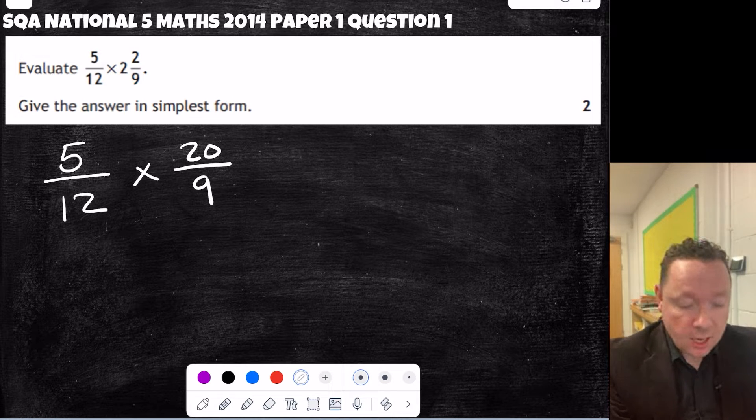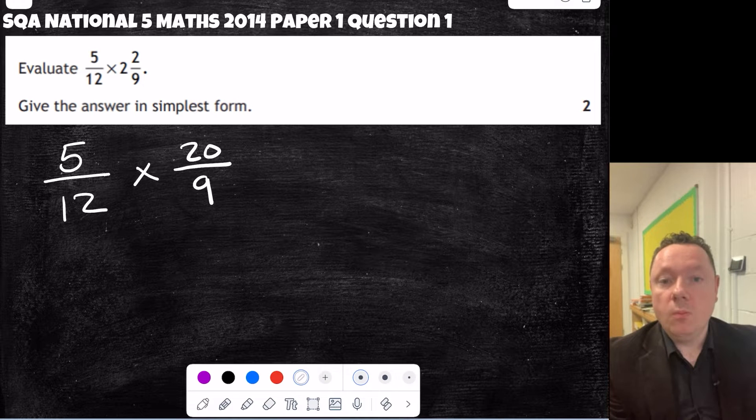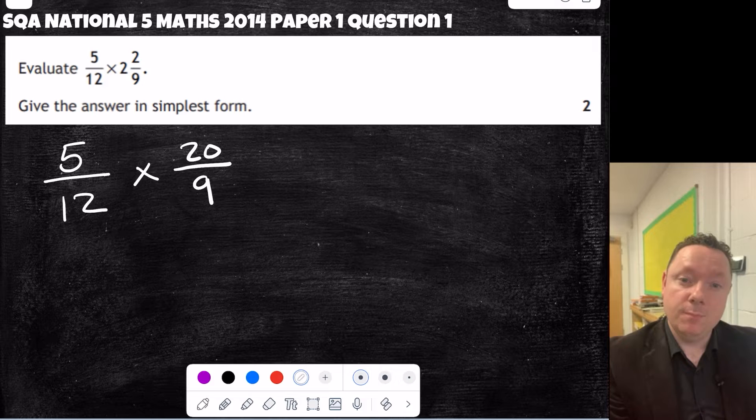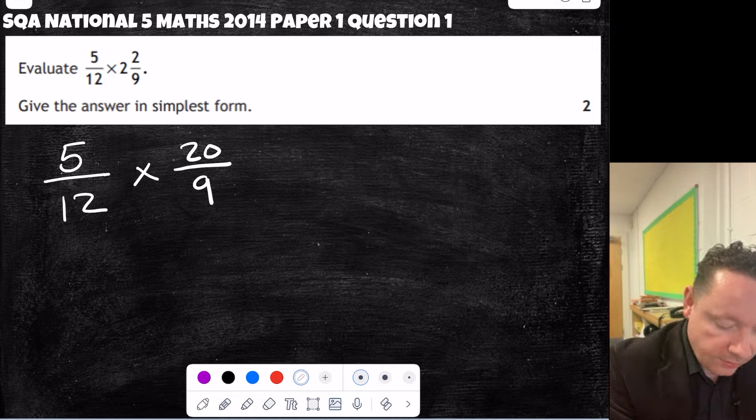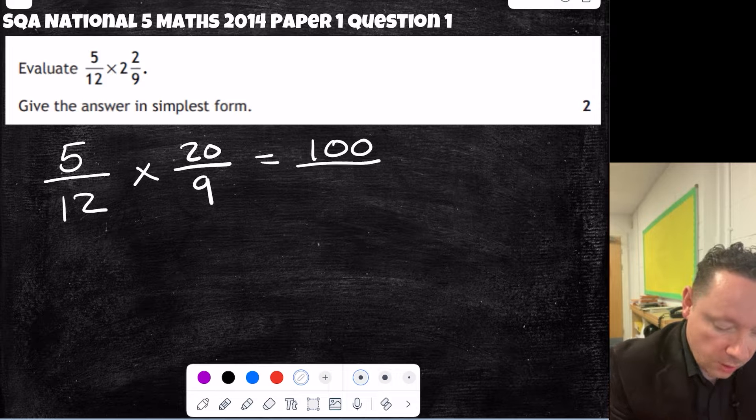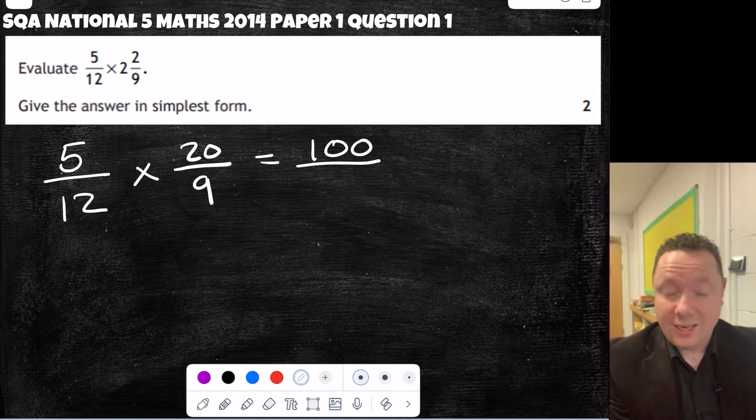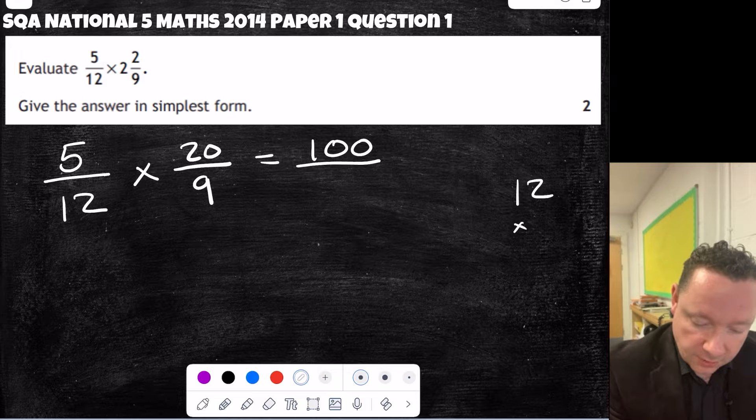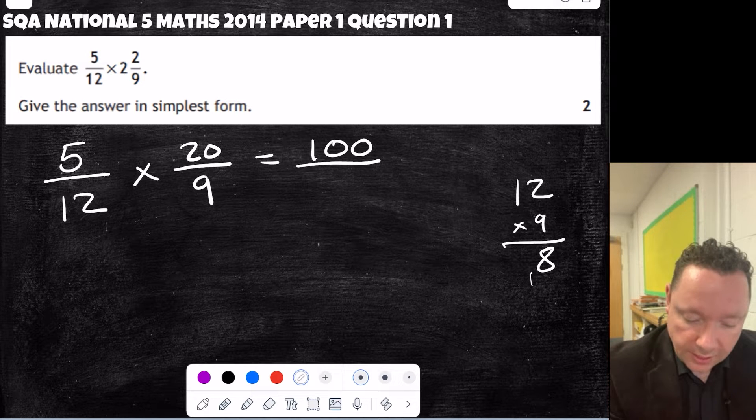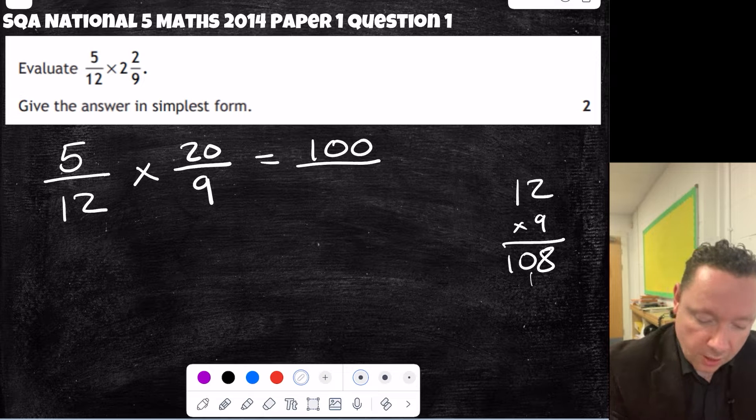And now I can do the times. I can times the top, then times the bottom. Or if you prefer, you can simplify in advance. I'm just going to go ahead and just times and then simplify at the end. So I'll do 5 times 20, which is 100, over 9 times 12. Now if you don't know what 9 times 12 is, at the side, 12 times 9, 9 times 2 is 18, carry 1, 9 ones are 9 plus 1 is 10. So you get 108.